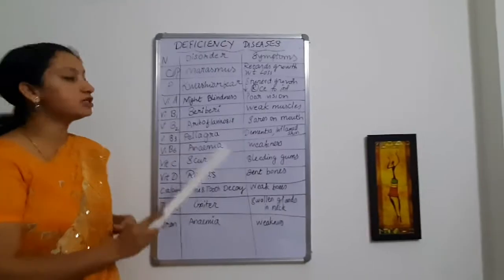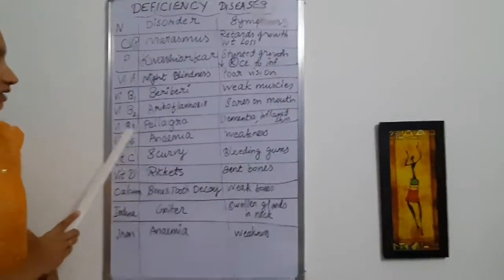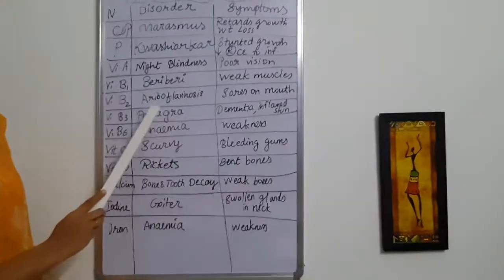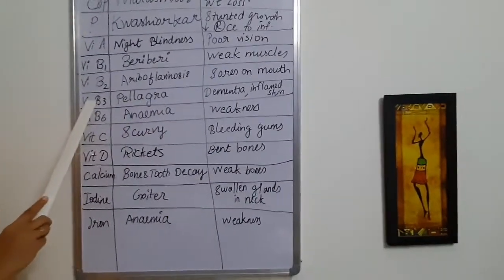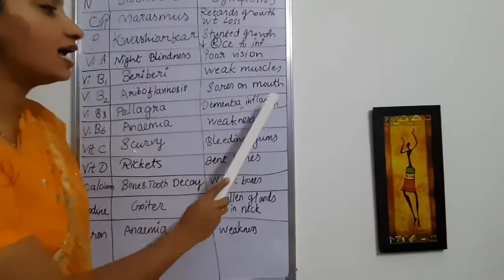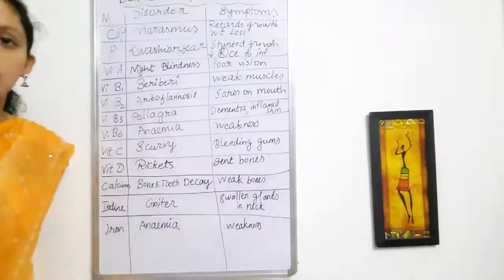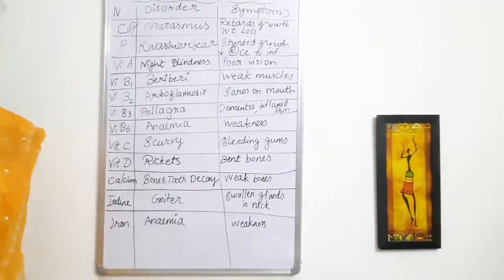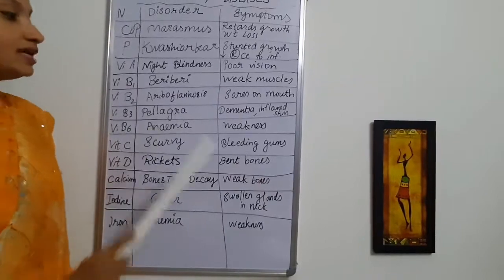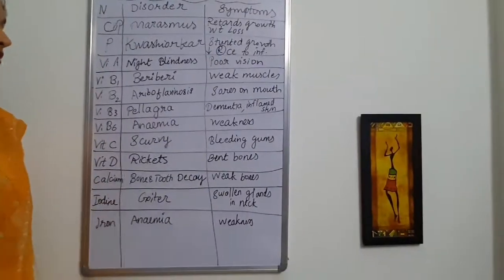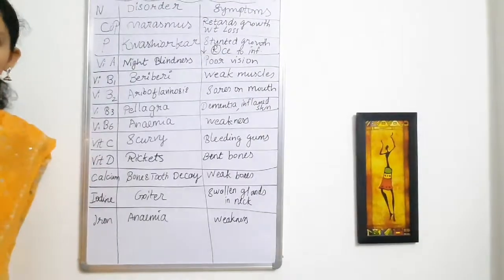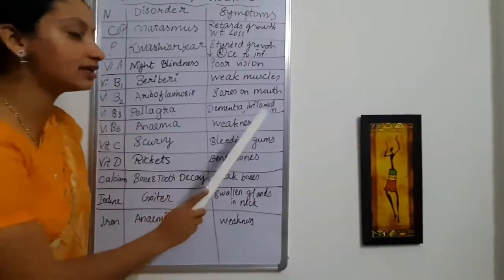Vitamin B3 deficiency causes pellagra. Pellagra is the name of the disorder caused by vitamin B3, and the symptoms are dementia and inflamed skin — the skin is more prone to infection. Vitamin B6 deficiency causes anemia. Anemia is due to the less production of hemoglobin in your body, so you feel weakness.